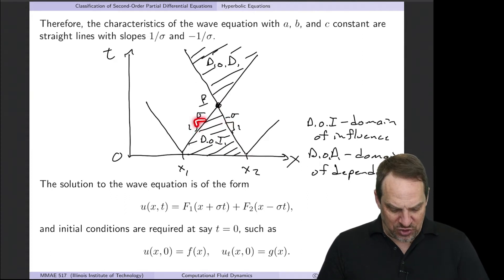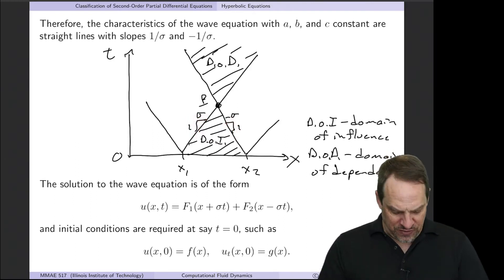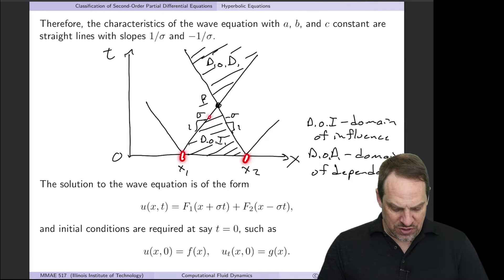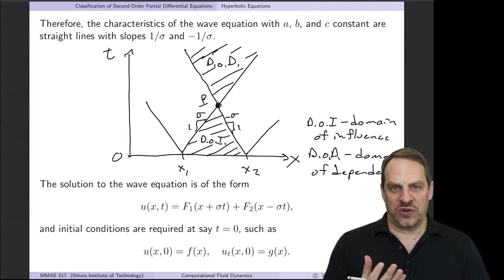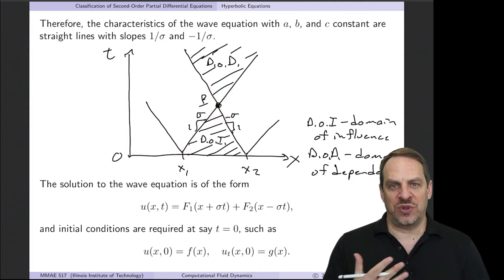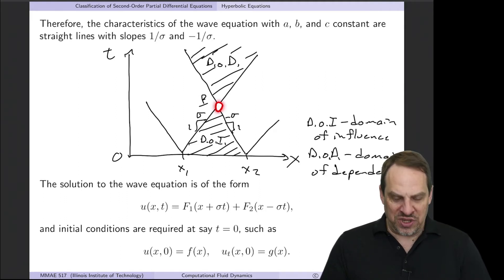The waves have slopes 1/σ and −1/σ. If you have two disturbances, these waves will cross, producing all of the interference effects when waves interact—which we won't get into here. What I want to look at is the point P where these two waves intersect.